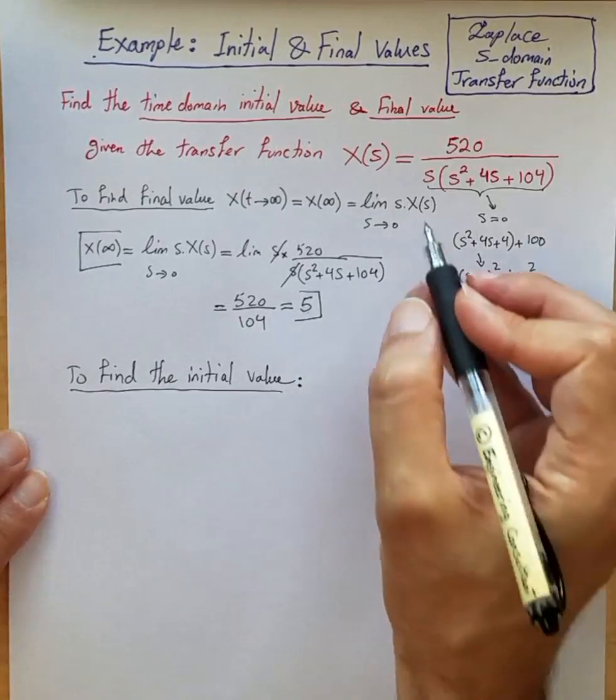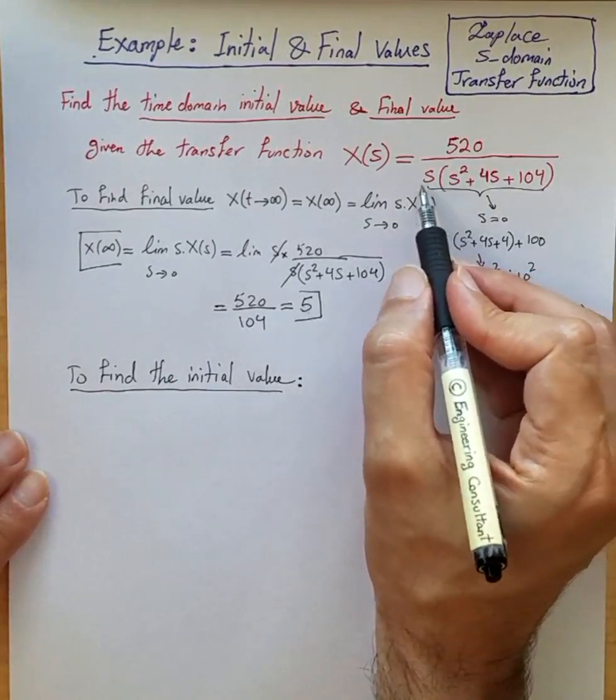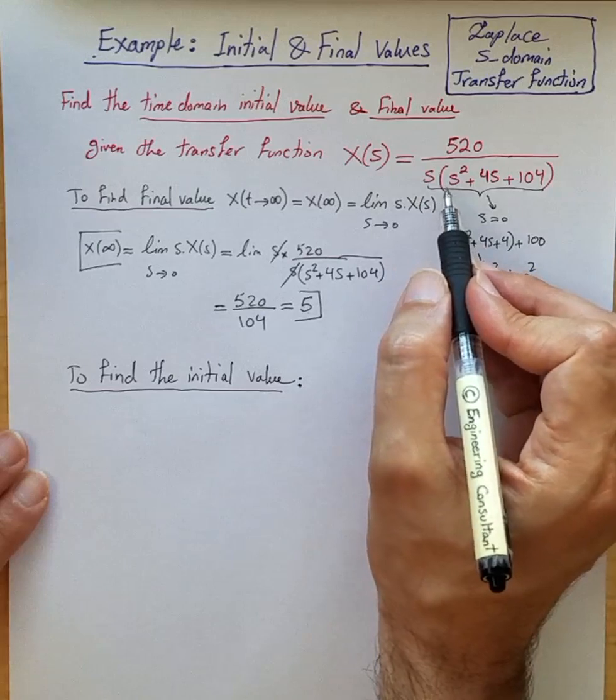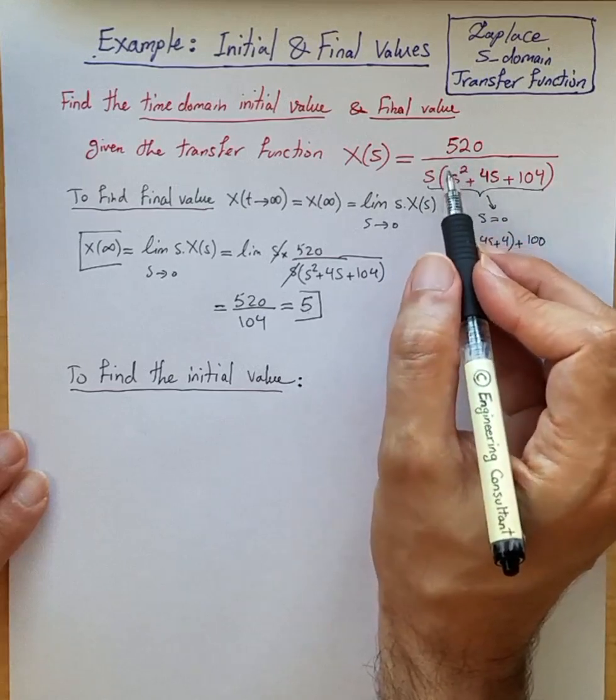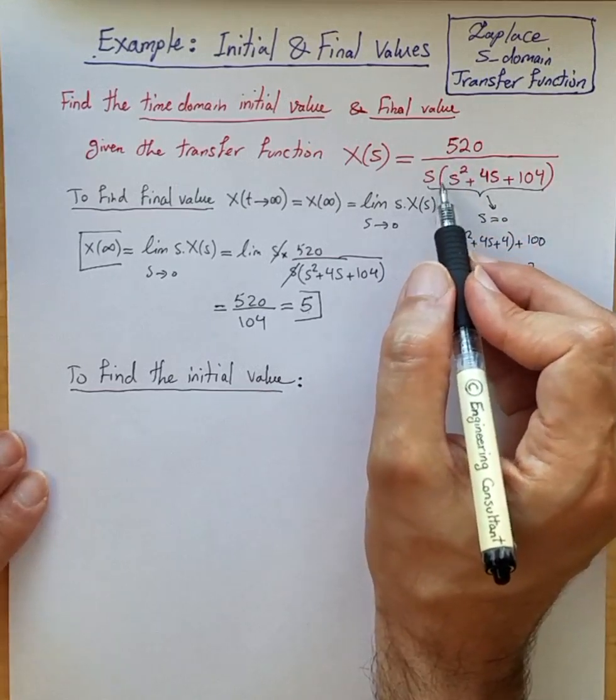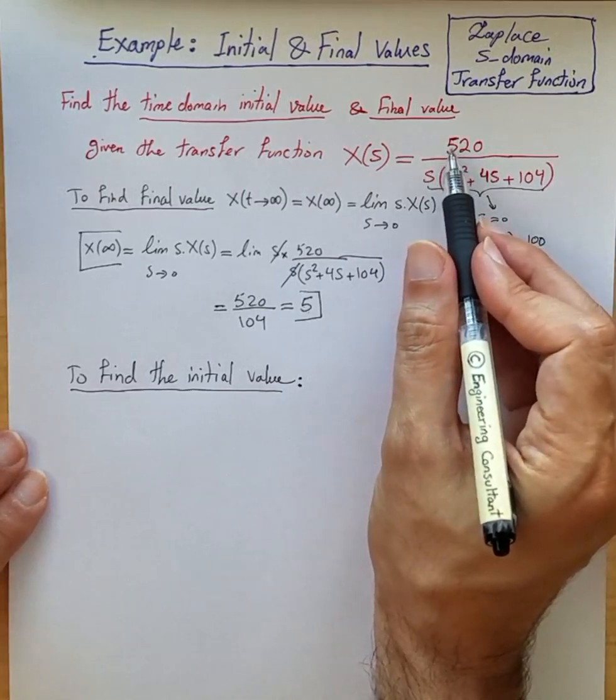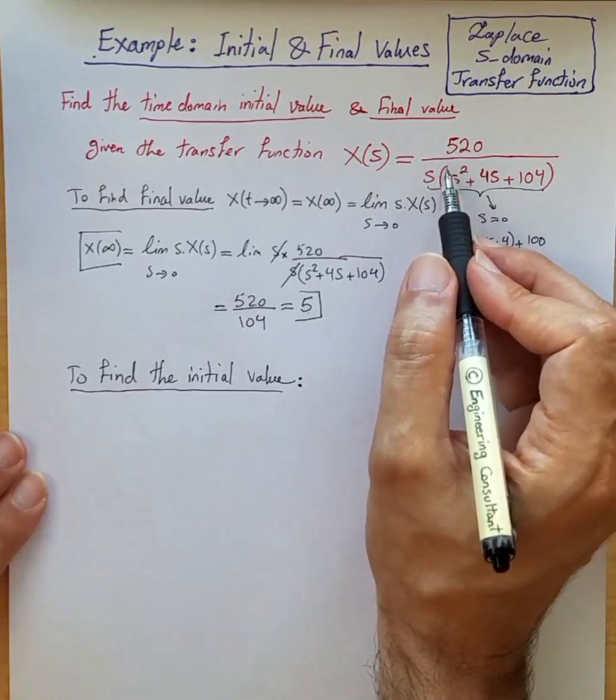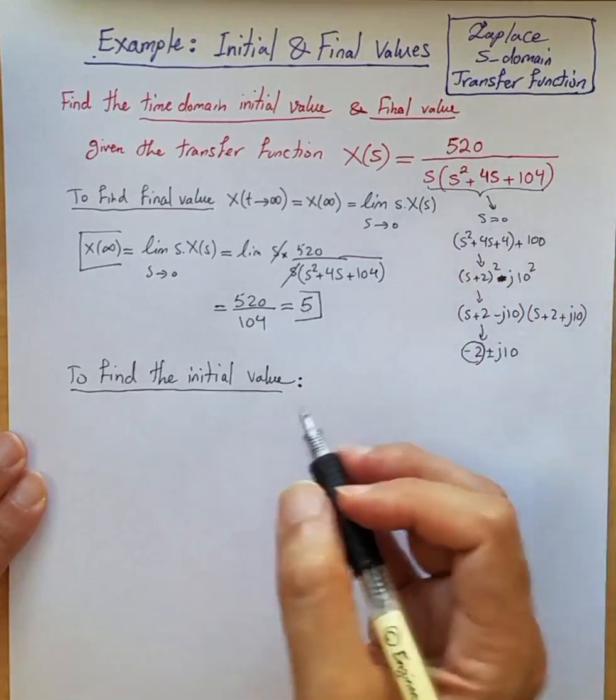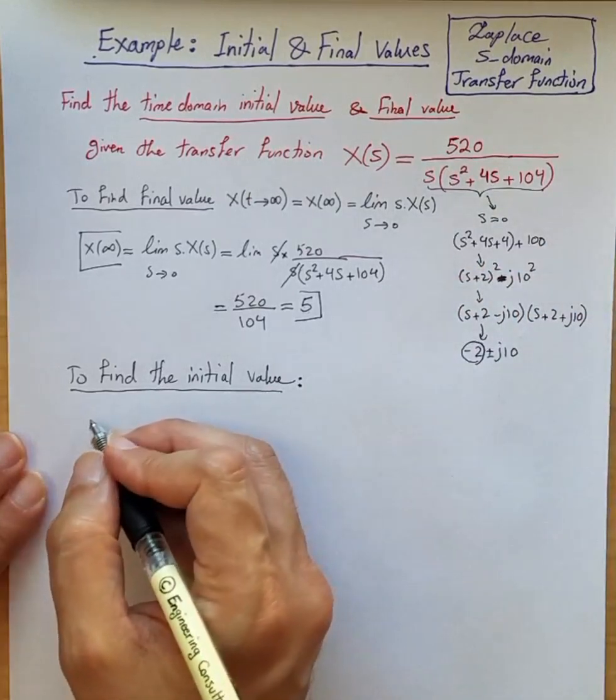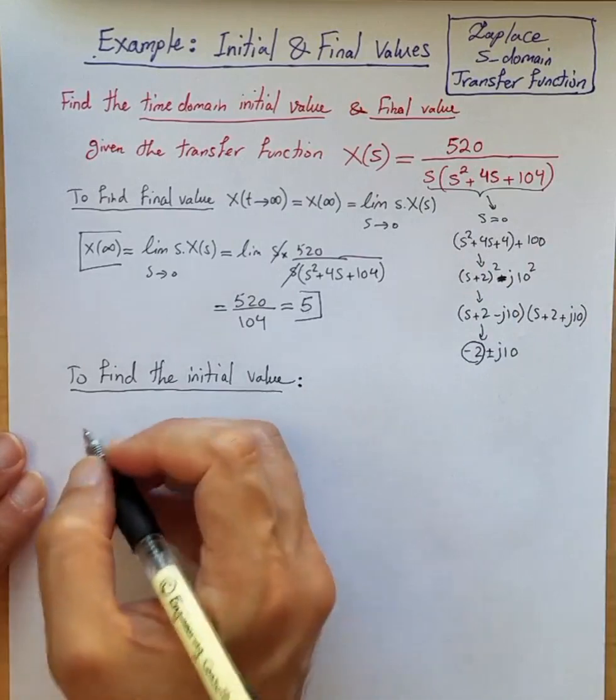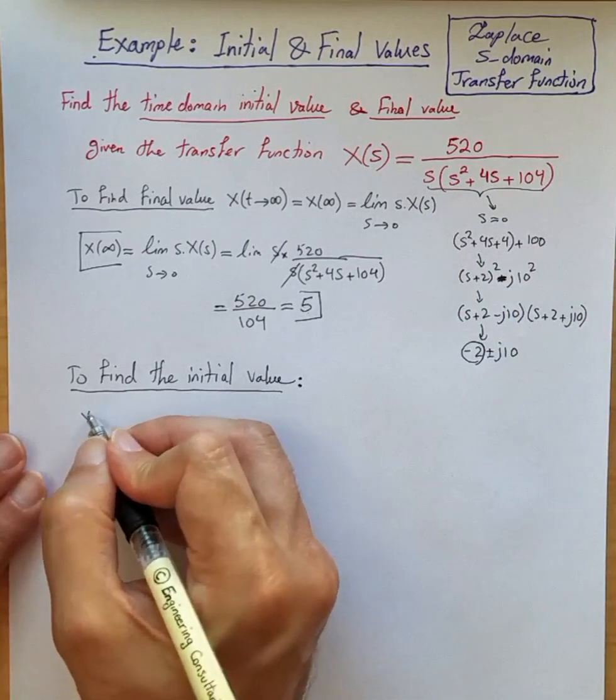We need to make sure that the degree of the polynomial in the denominator is higher than the degree of polynomial in the numerator. In this case there is a third order polynomial in the denominator, which satisfies the condition discussed in the previous video. Therefore, because the condition is satisfied, the initial value theorem holds.